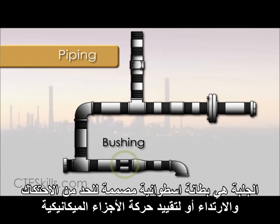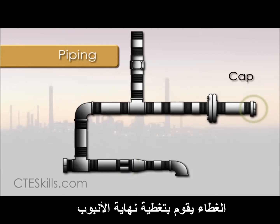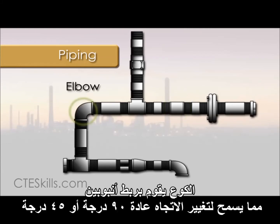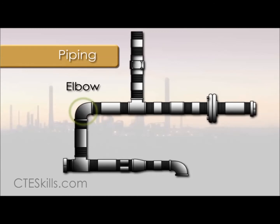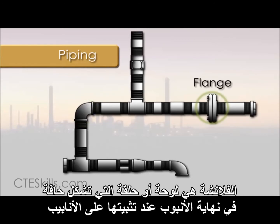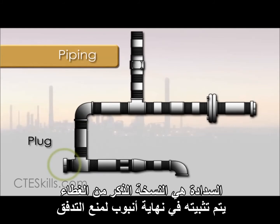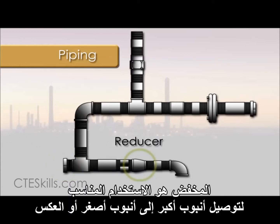A bushing is a cylindrical lining designed to reduce friction and wear, or constrict and restrain motion of mechanical parts. A cap covers the end of a pipe. A coupling connects two pipes together. An elbow is a pipe fitting installed between two lengths of pipe, allowing a change of direction, usually 90 or 45 degrees. A flange is a plate or ring that forms a rim at the end of a pipe when fastened to the pipe. A nipple is defined as a short stub of pipe which has two male ends. A plug is the male version of the cap; it screws into the end of a pipe to block flow. A reducer is a fitting used to connect a larger pipe to a smaller one, or vice versa.